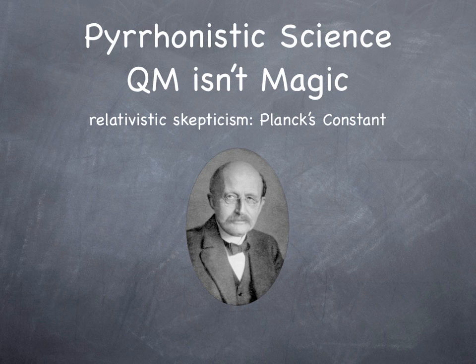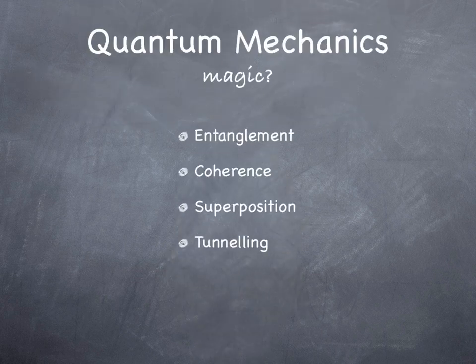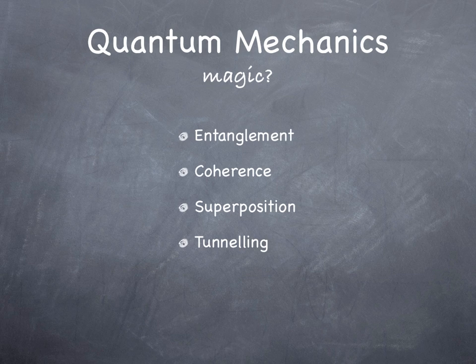We're going to go for some pyrrhonistic science — QM is magic, Planck's constant. Some of the things, the properties of quantum mechanics that people argue about and make magical — they do exist, they're parts of quantum mechanics. Entanglement, coherence, superposition, tunneling — all very interesting things. We'll get to them, and I think I can show that these are not magic as well. It should be pretty straightforward insofar as nothing's magic.